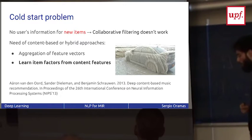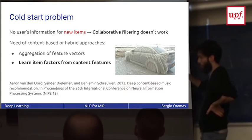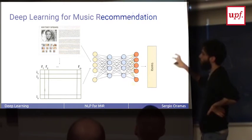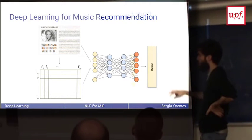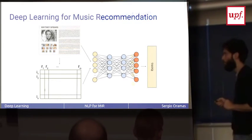There are two hybrid approaches. One is the aggregation of feature vectors, that I explained before in the recommendation. Or we can learn the item factors from content features. There was a paper from Sander Dieleman and Aaron van den Oord that is very good. What they do is learn the item factors from the audio content using deep learning. What we're working on now is to learn the item features from the artist's biography.